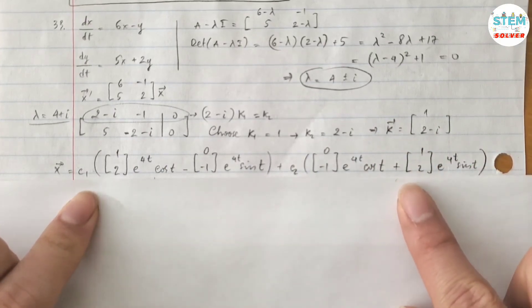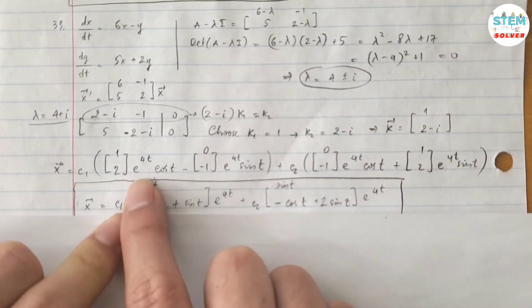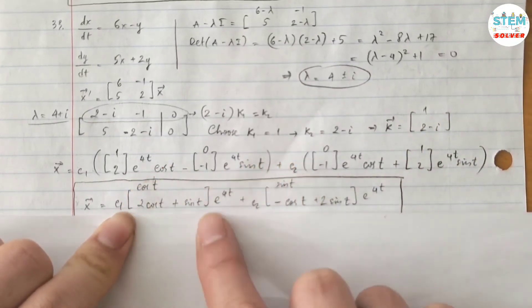You can stop at this step, but if you want to go further, you can simplify it down. So because they have e^(4t) in common I can pull it out.